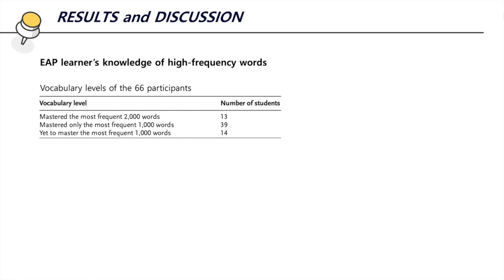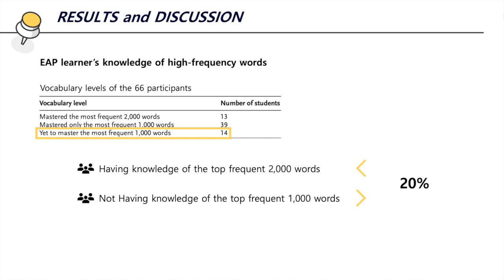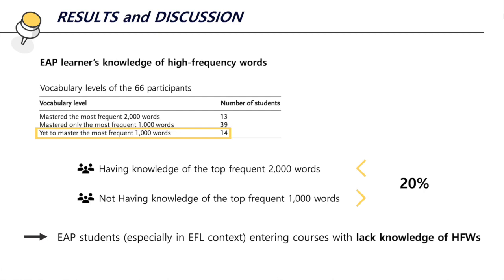The third research question about EAP learners' word knowledge is explained by the vocabulary test results. The number of students who mastered the high frequency words is only 13 out of 66 and 16 out of 66, which is less than 20% of the students. 39 students had knowledge of only the most frequent thousand words, and 14 students — more than 20% — had not mastered even the most frequent thousand words. Based on these results, it is relevant to consider that EAP learners, especially in EFL contexts, lack knowledge of high frequency words when entering the program.